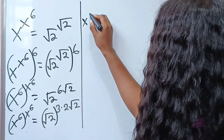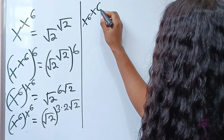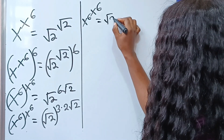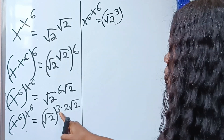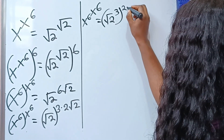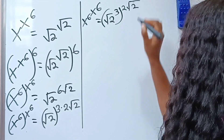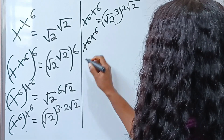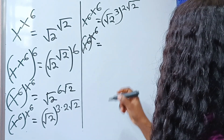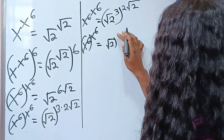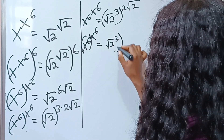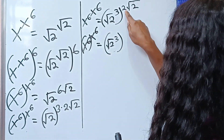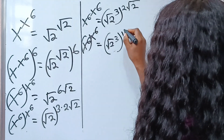So we have x to the power of 6 raised to the power of x to the power of 6, equal to square root of 2 raised to the power of 3, now raised to the power of 2 root 2. I want to bring that 2 root 2 inside the root, so I'm going to square the 2 to move it inside the square root.